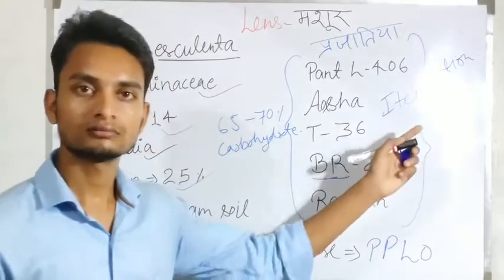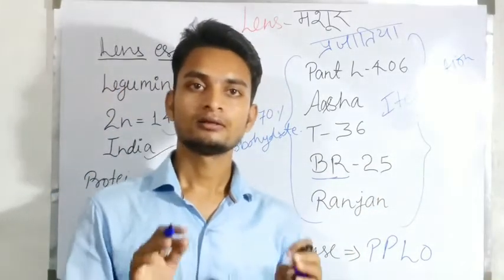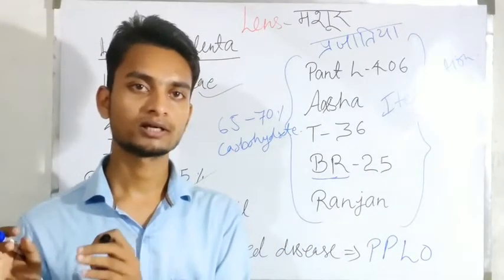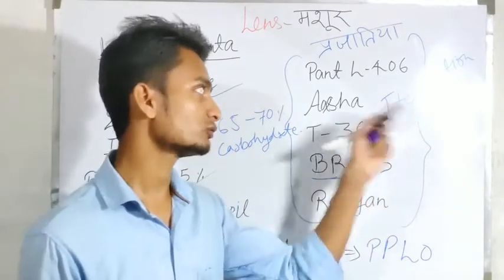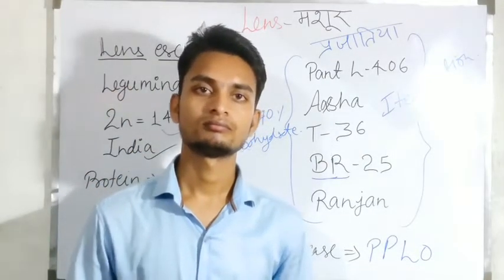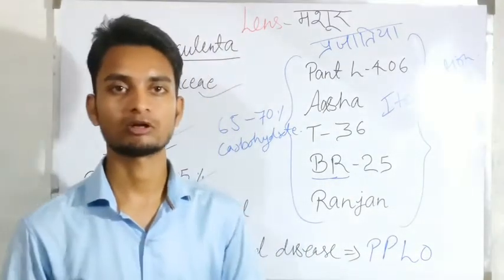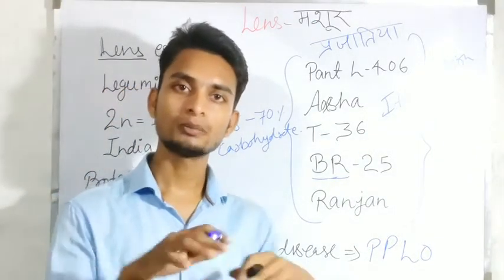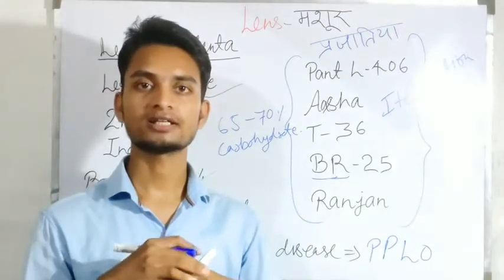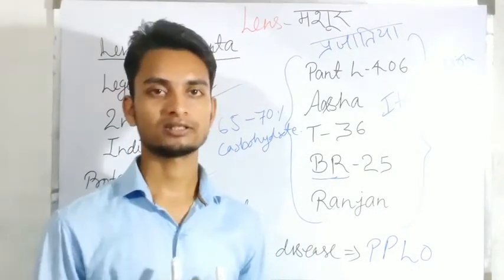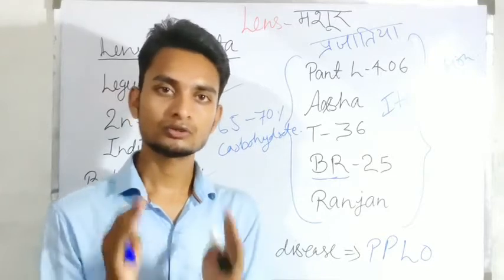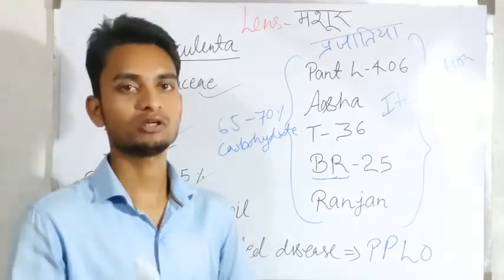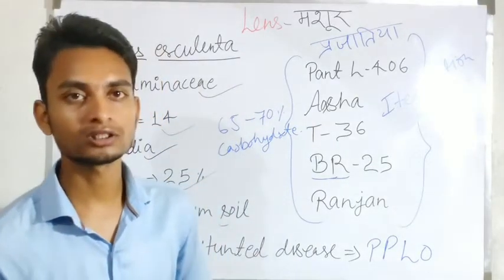Etiolation means the process related to plants growing in shade. Plants that grow or are kept in shade generally turn yellow. This yellowing process is called etiolation, and this condition is also referred to as SBD.